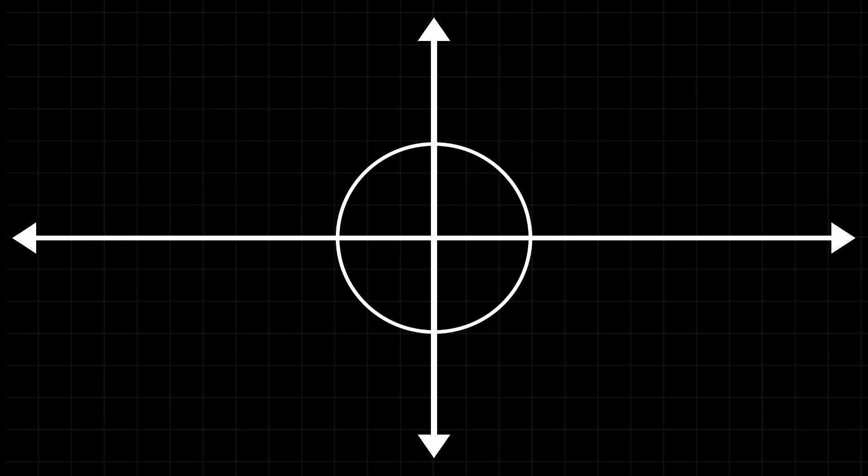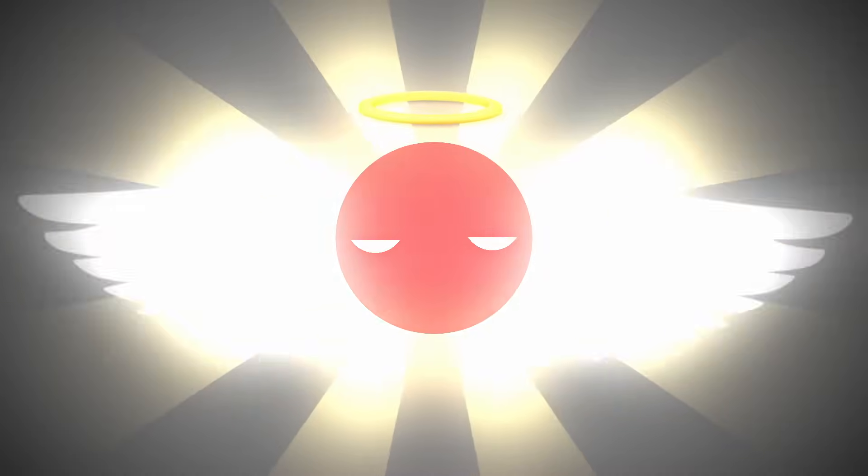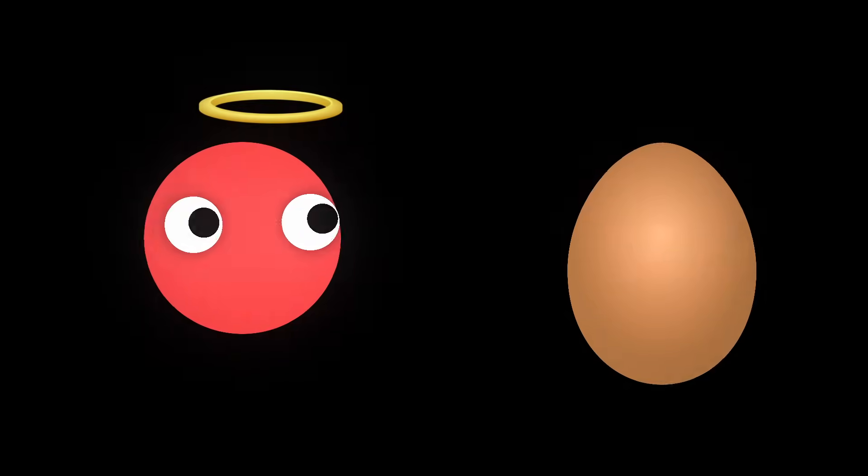To graph a circle on the XY plane, all we need to do is use Pythagoras theorem to derive x squared plus y squared equals r squared, where r is the radius. We have a perfectly well-rounded circle now, and this does look somewhat like an egg.